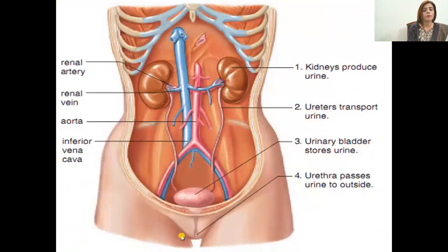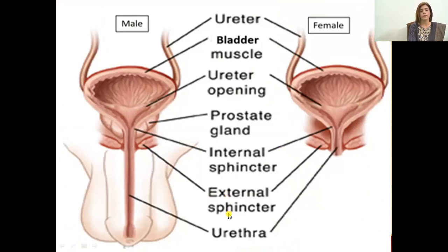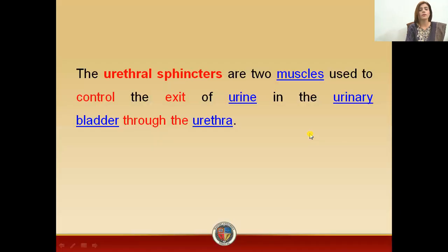Now looking at this diagram, you have kidneys, you have the ureter, you have the urinary bladder, and then you have the urethra. The figure also shows the internal sphincter muscle and the external sphincter muscle — internal meaning inside, and external meaning on the outer side.